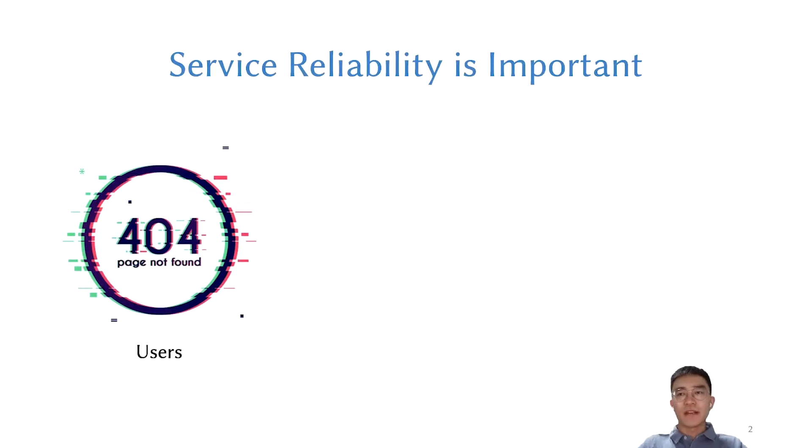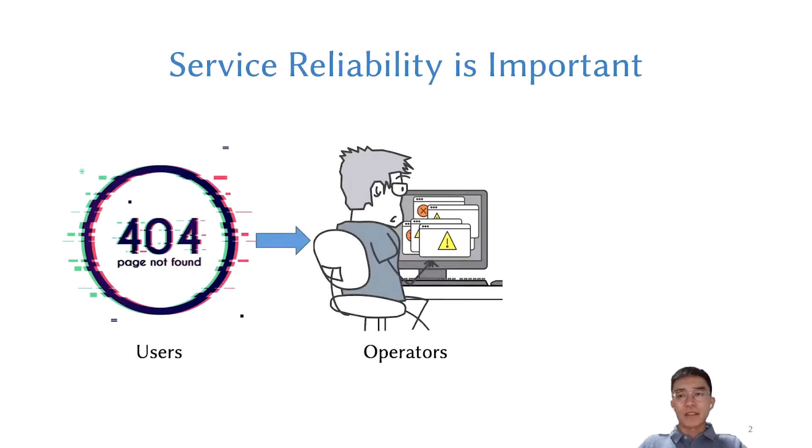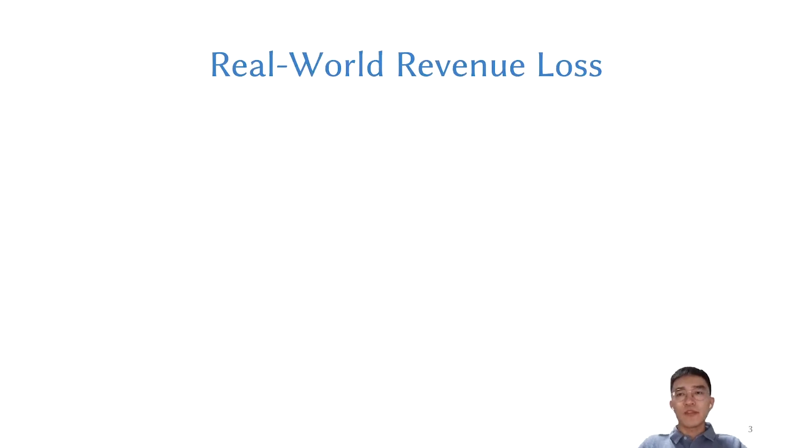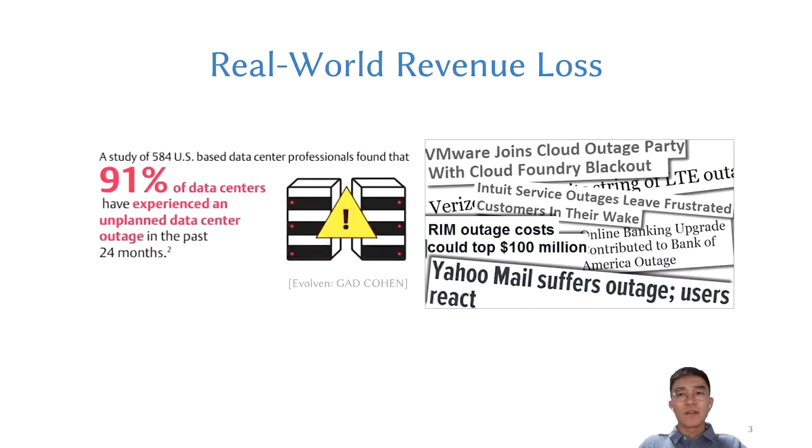In recent years, online service systems based on cloud computing are becoming increasingly popular. However, these services may not always be stable. For example, we may experience page not found errors sometimes. System bugs, service interruptions, or performance issues will harm user experience, which lead to revenue loss. There are many real-world cases. A lot of news reported that large-scale service systems have unplanned outages, which cost millions of dollars. Therefore, ensuring service reliability is of great importance.